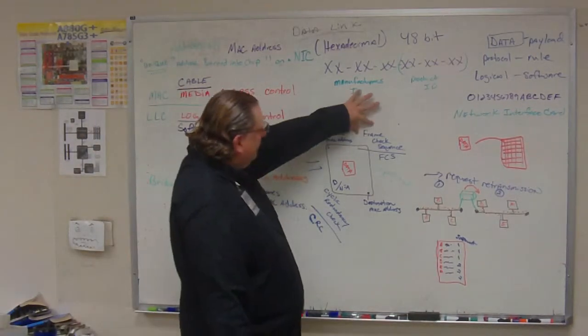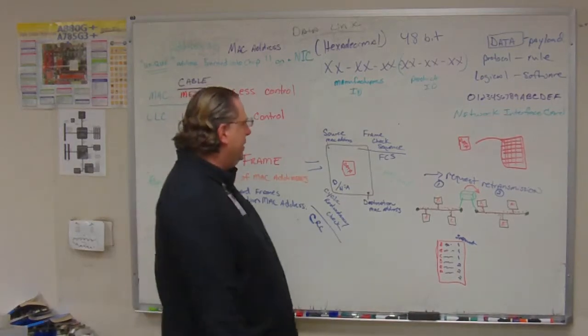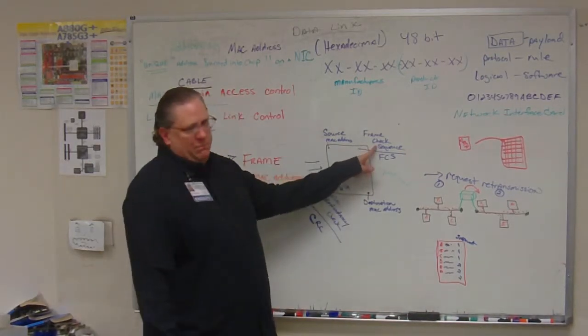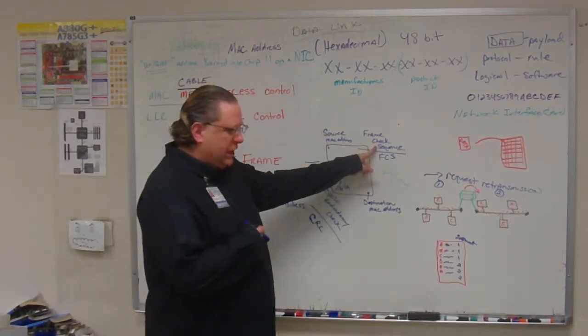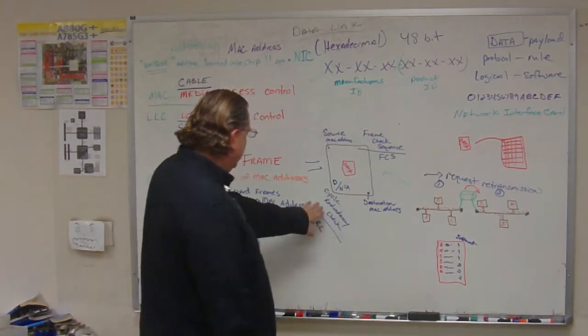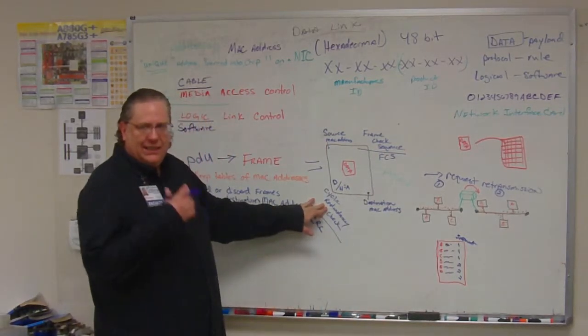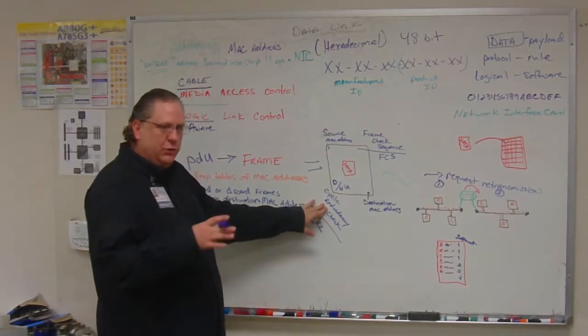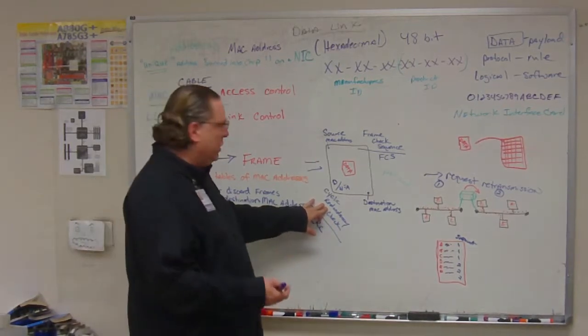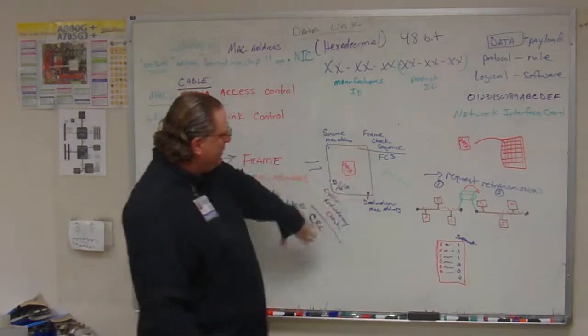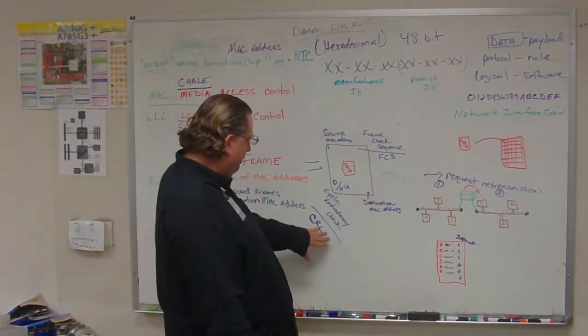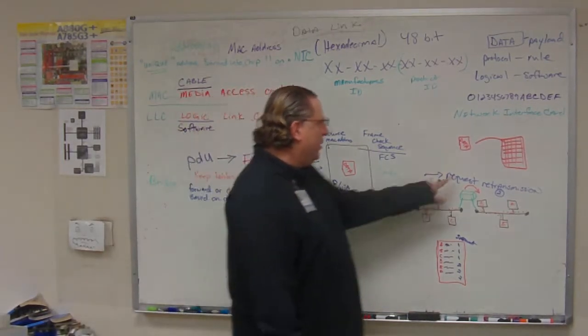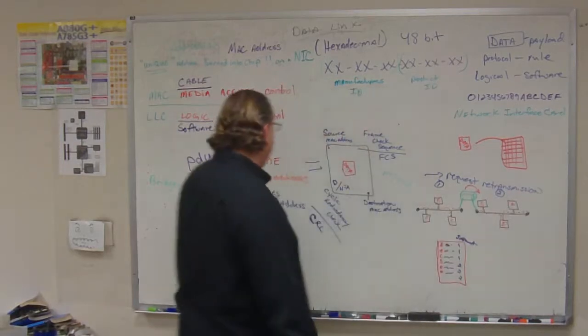Also included is the frame check sequence and the cyclic redundancy check, or numbering the pieces of the puzzle so that we can put this back together quickly and making sure that each piece of the puzzle is correct. There's not too much information or too little information, meaning that it's corrupt. And if either of those happen, if we're missing puzzle pieces or a puzzle piece is corrupt, we need to request retransmission. Please send me that again.